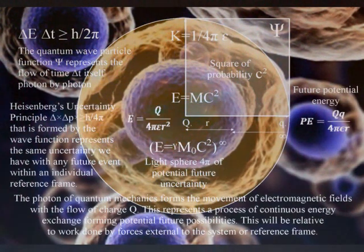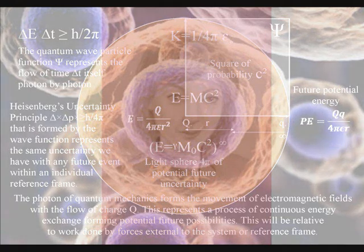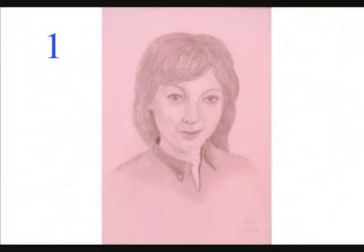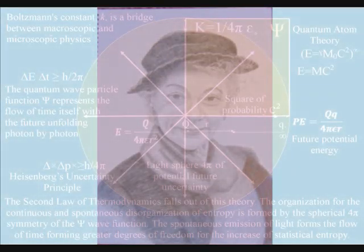The greatest effect this process of continuous energy exchange has on us is the aging process, with photon energy from the sun cascading down, forming greater degrees of freedom for the continuous increase in entropy or disorganization.